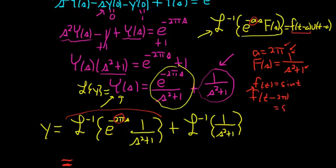So it's going to be sine of t minus 2π. Okay, sine of t minus 2π. And then times the unit step of t minus 2π. Plus, and then this here would just be the sine of t. And that's it. Now I guess you could simplify this.